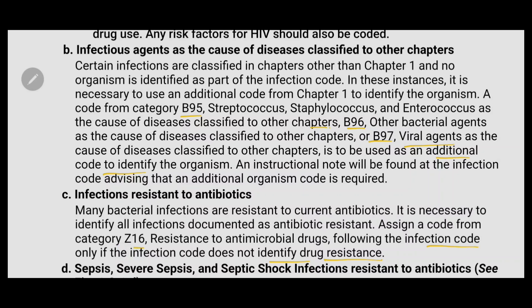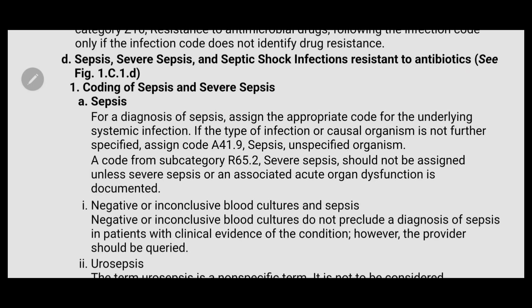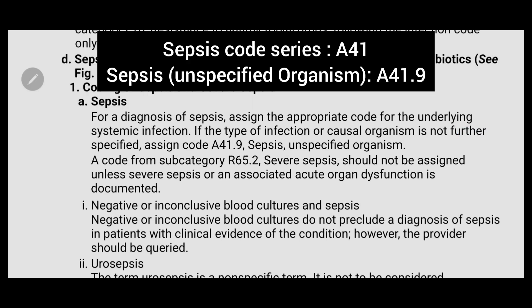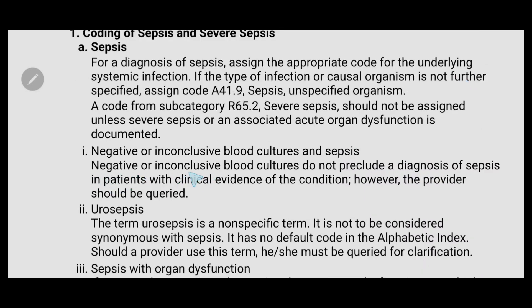The next important guideline in Chapter 1 is sepsis, severe sepsis, and septic shock. Sepsis is a serious condition in which the body responds improperly to an infection. The sepsis code series is A41. If sepsis is mentioned, use a code from series A41 and code the specific organism if mentioned. If the type of infection or causal organism is not further specified, use code A41.9, sepsis unspecified organism. Negative or inconclusive blood cultures do not preclude a diagnosis of sepsis in patients with clinical evidence of the condition; however, the provider should be queried.